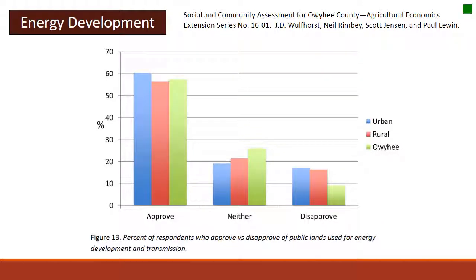JD Wolfhurst's study looking at energy development across urban, rural, and Owyhee County demographics shows there's really not a huge difference between populations. Over 50% approve of energy development, though it's not much greater than 50% in most cases. People like energy and using it; however, we need to be strategic when placing energy developments and creative when using these natural resources. That's one of the most exciting parts about rangeland management — being creative with resources to meet society's needs strategically.